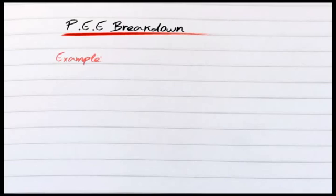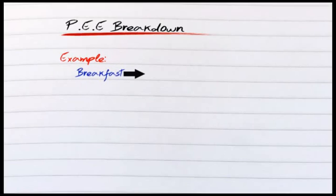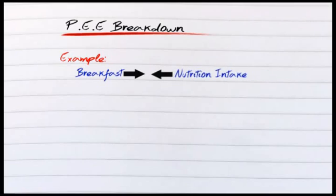For example, if I said to you something like, have you had breakfast this morning, that's obviously very simple, very easy to follow. If I say, did you have your nutrition intake, it means the same thing, but it's just not a way you're used to being presented it. PEE is actually very simple and very similar.